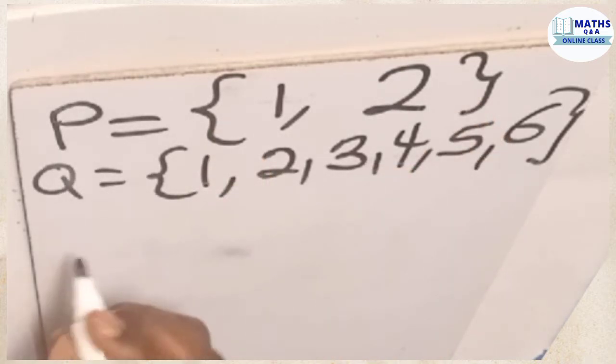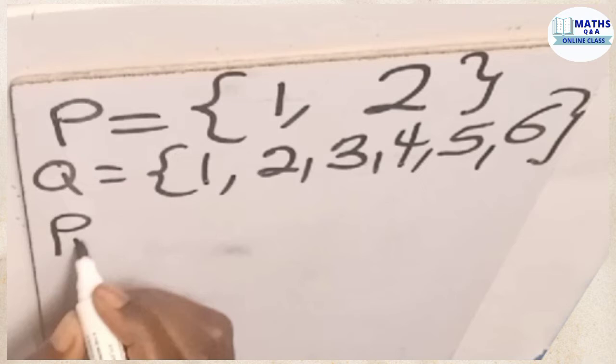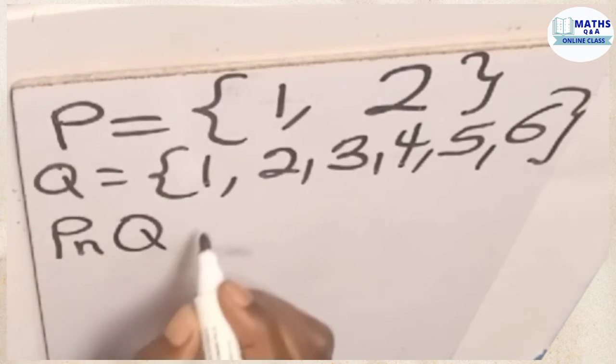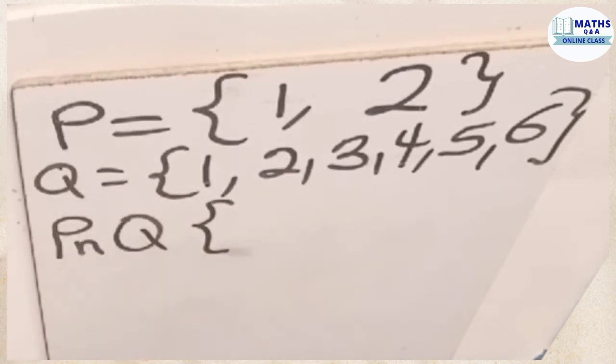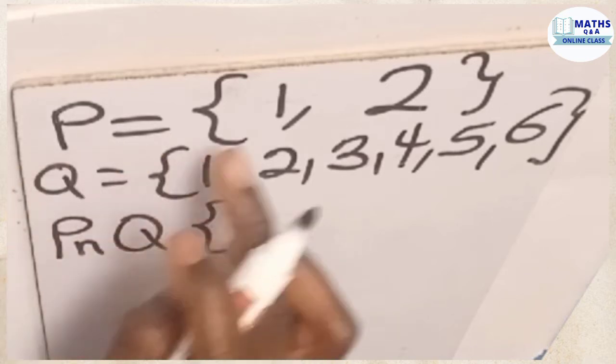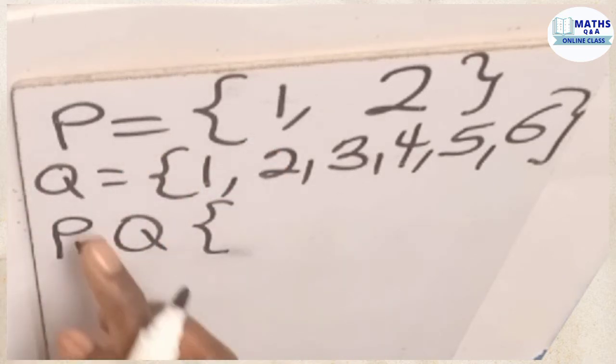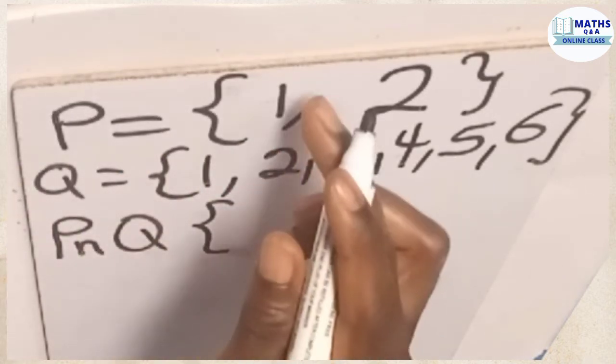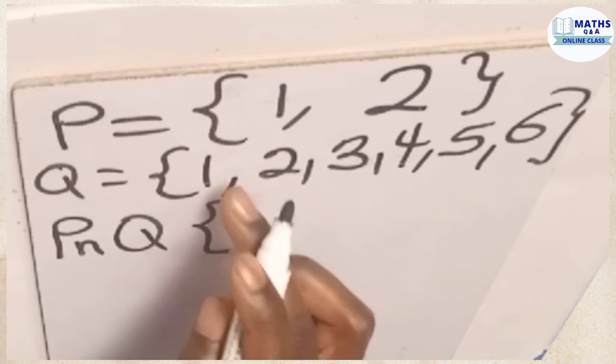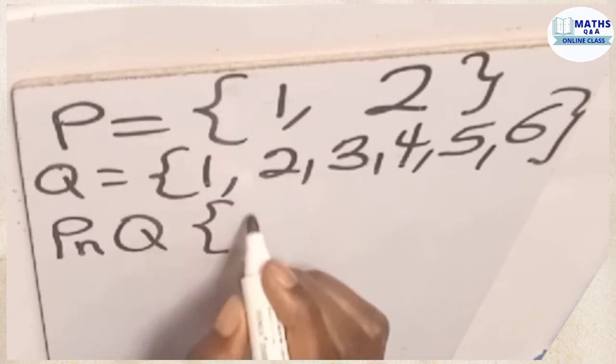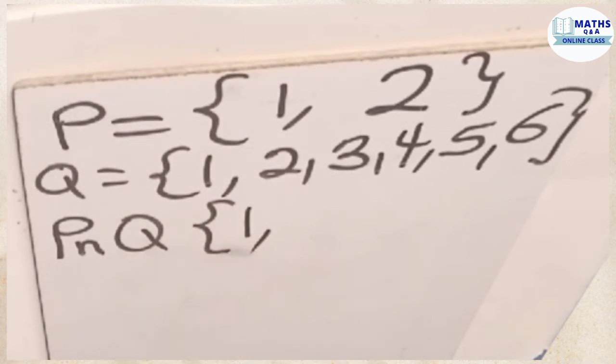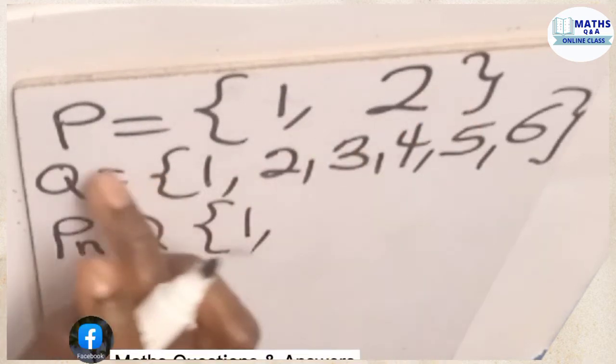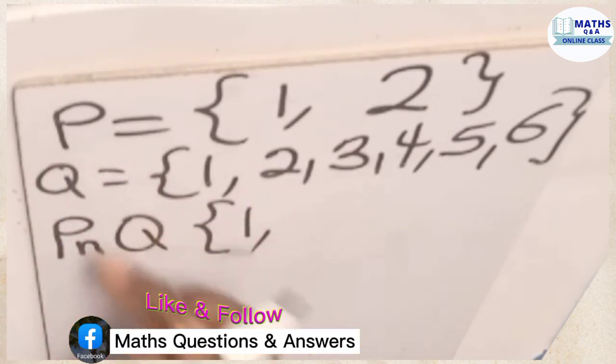So let's write that. We have set P intersection set Q. So which of the members or numbers can be found in set P and can also be found in set Q? Now we can see 1 in set P. We can also see 1 in set Q. So we write our 1. We can see 2 in set P. We can also see 2 in set Q.